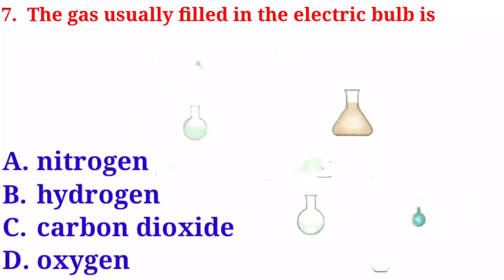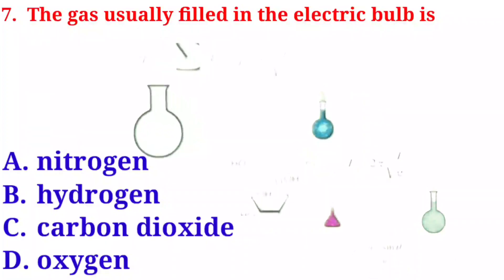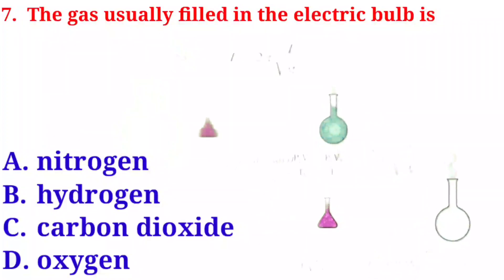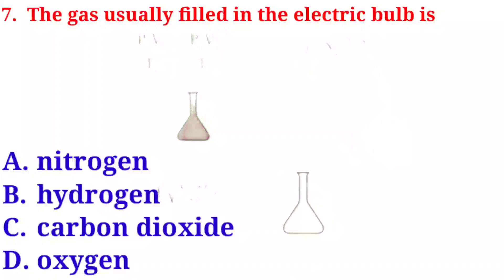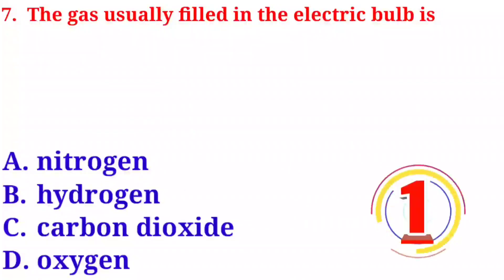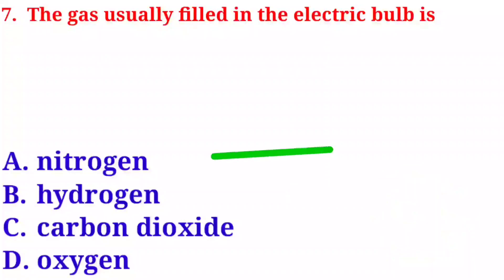Question number seven: the gas usually filled in an electric bulb is — option A: nitrogen. Option B: hydrogen. Option C: carbon dioxide. Option D: oxygen. The correct answer is option A, nitrogen.